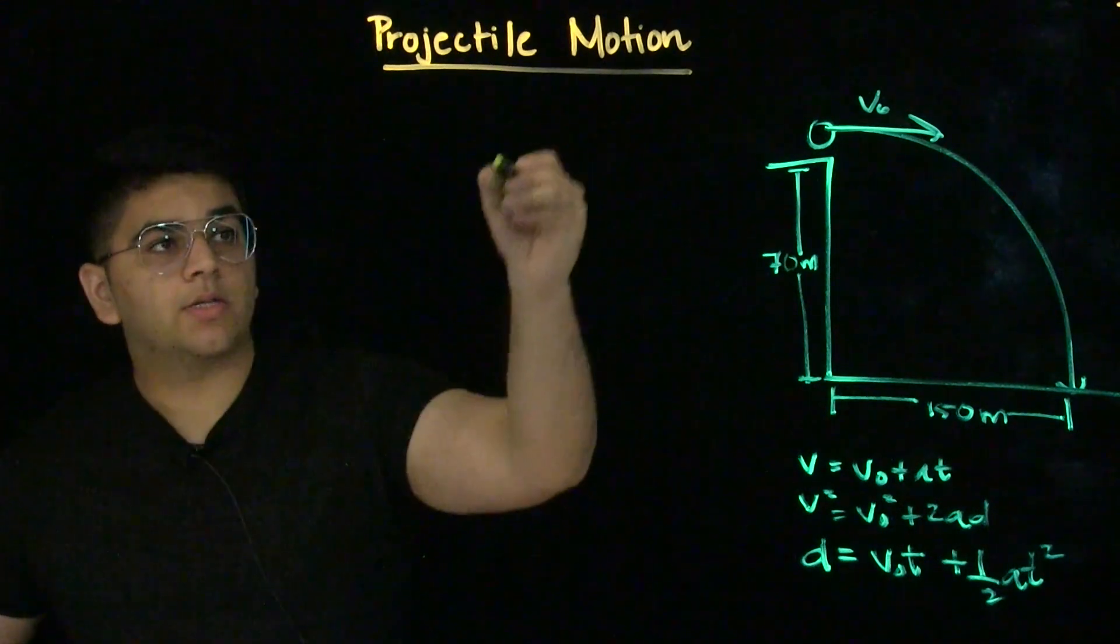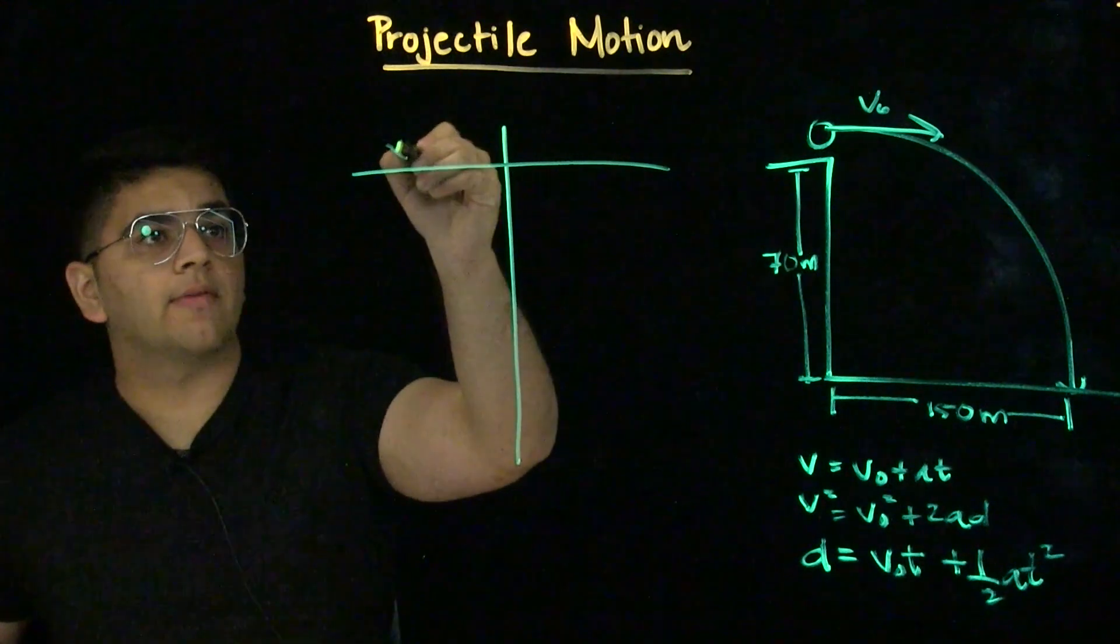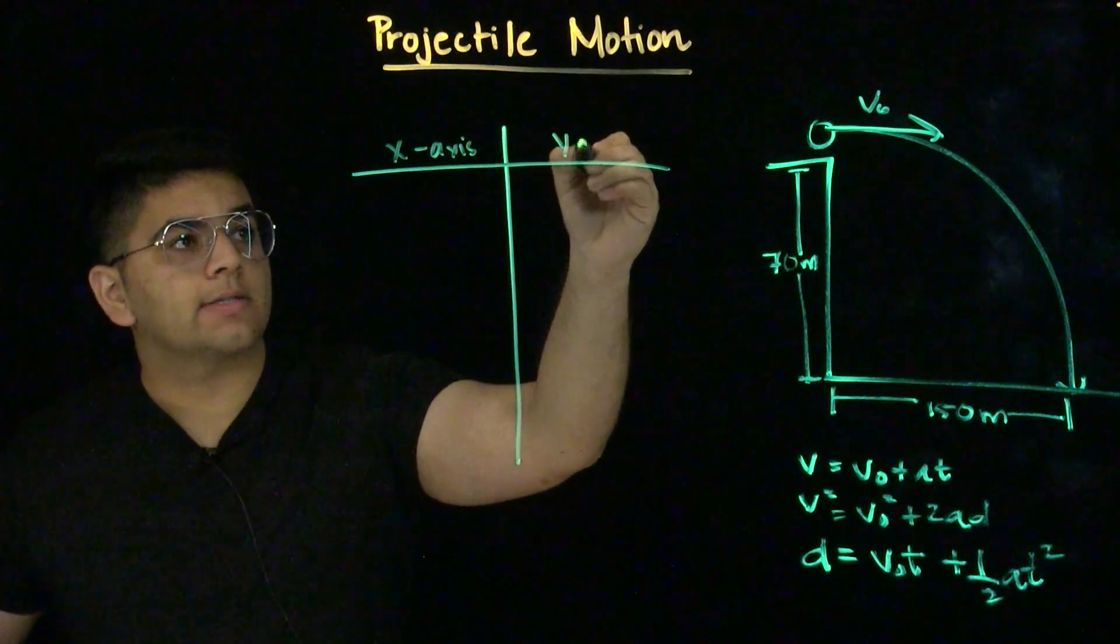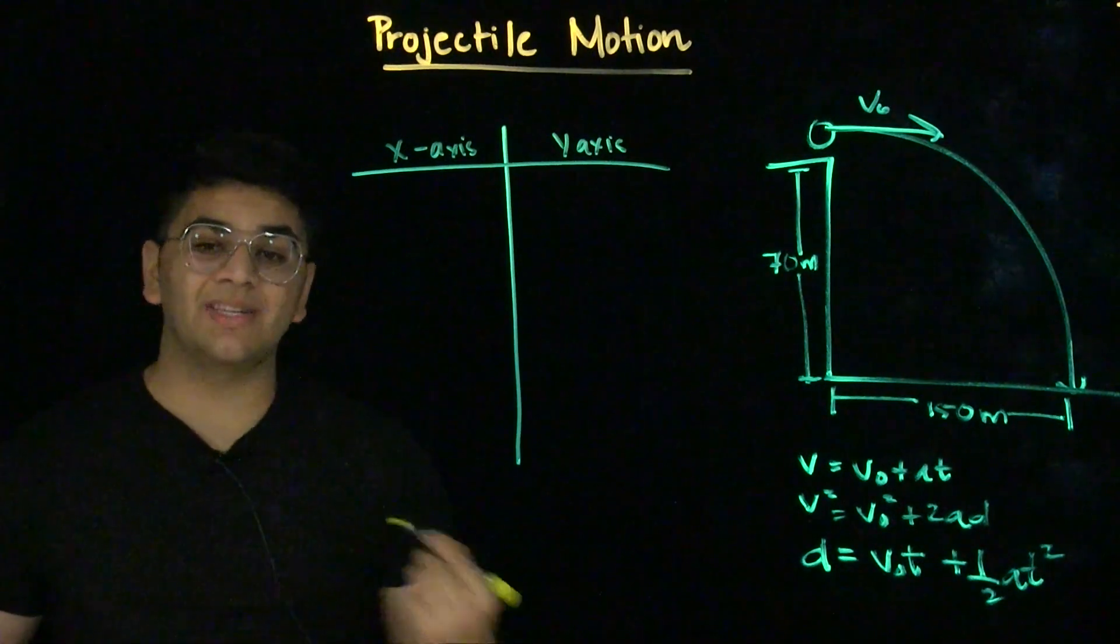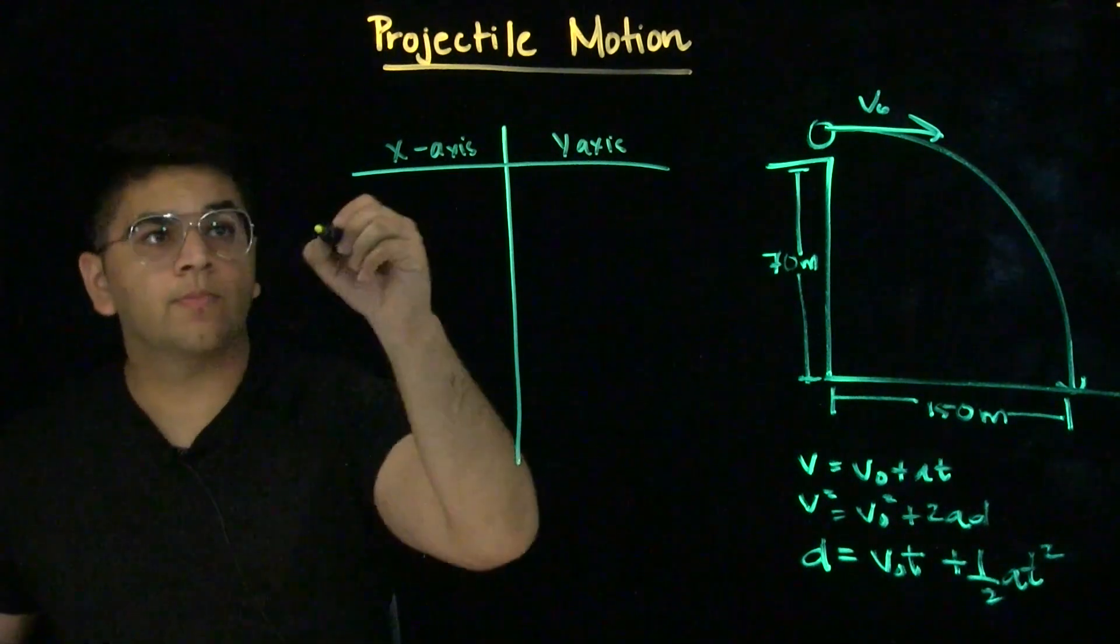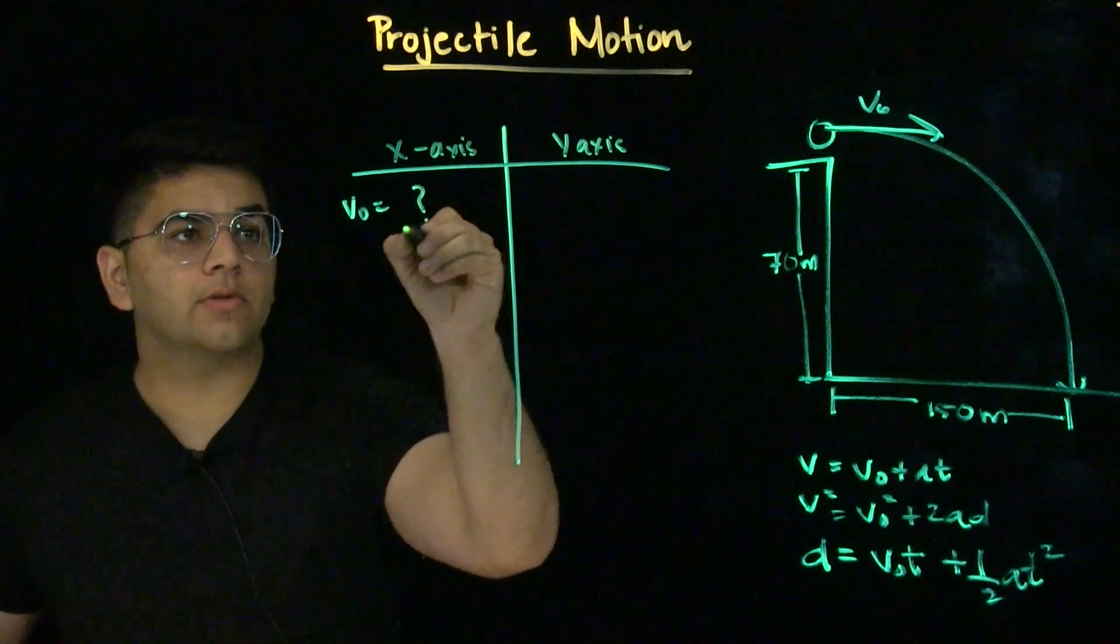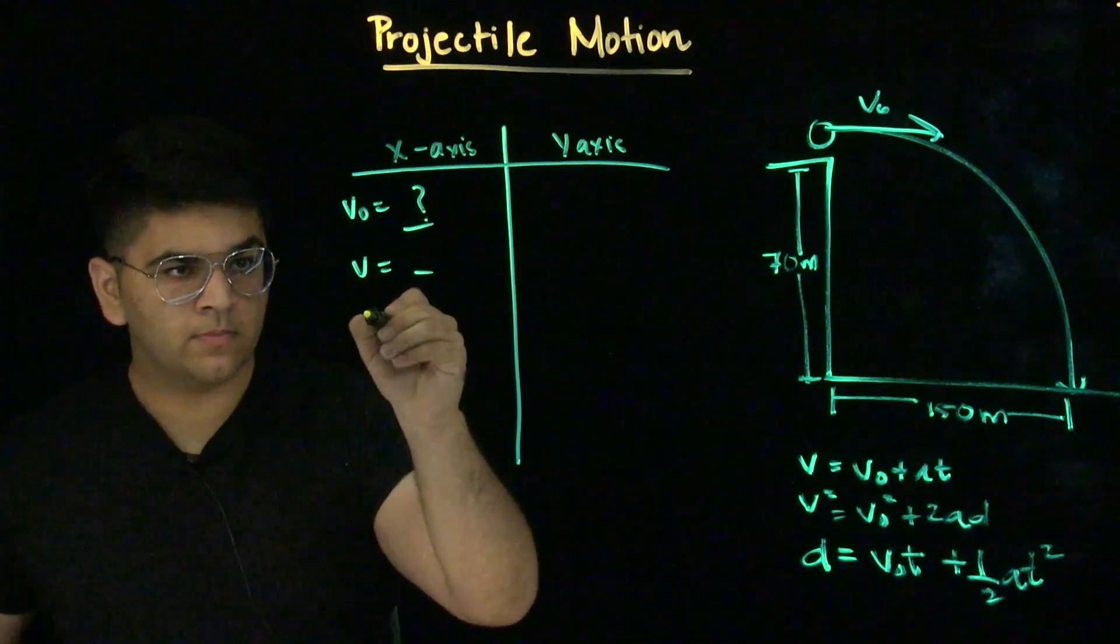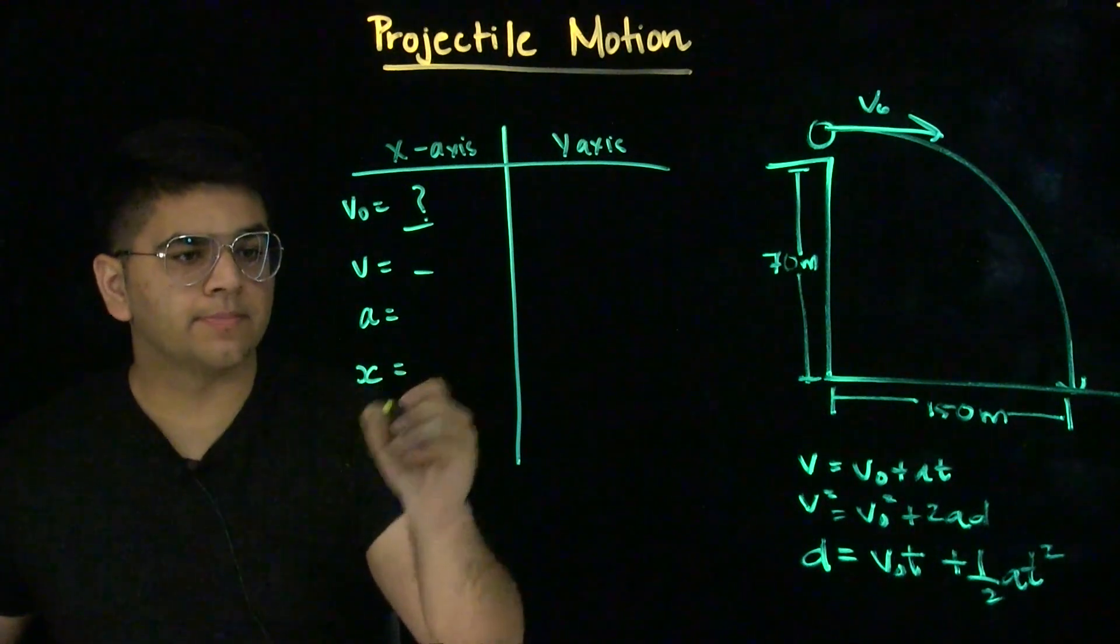First step is always to split up the problem into its respective axes. We have the x-axis and the y-axis. And list all the known variables in each axis for the kinematic variables. We have initial velocity, which is the value we're looking for. We do not know final velocity. There's acceleration, displacement, and time.